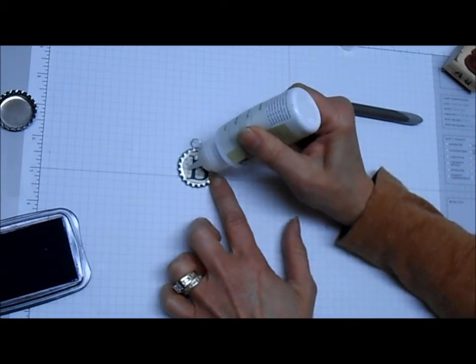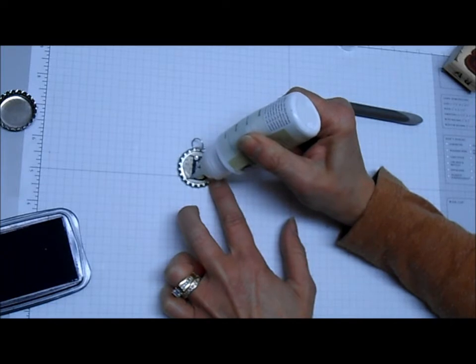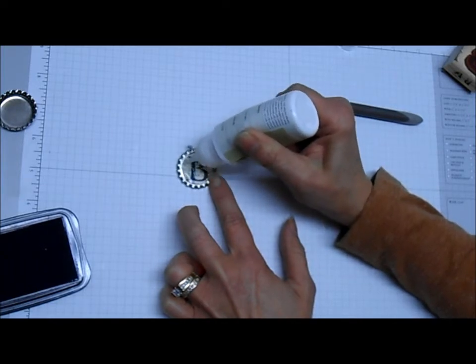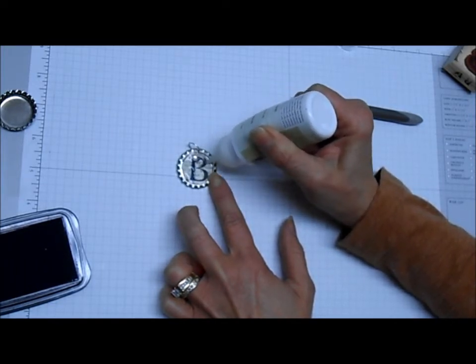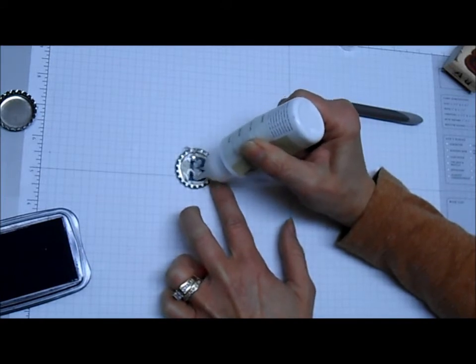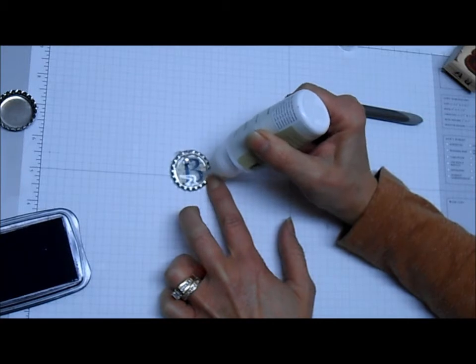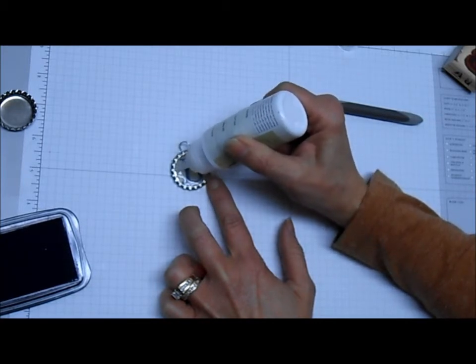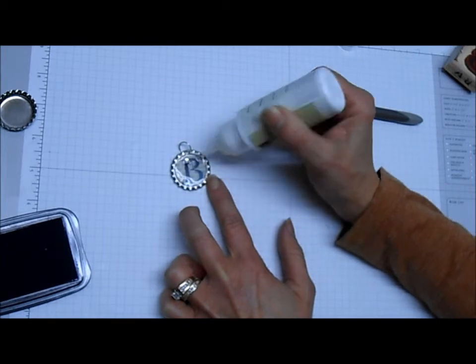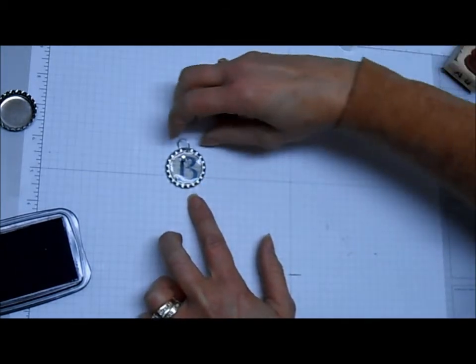And then I want to make sure that that is underneath my Crystal Effects when I put it in. And there really is no special way to do this. I kind of work my way around the inside, right up to the ridge or rim. And you just want to make sure and not leave any bubbles. So you don't want to shake your Crystal Effects. Just make sure it gets right up. And then of course I'm going to need to set that aside to dry.